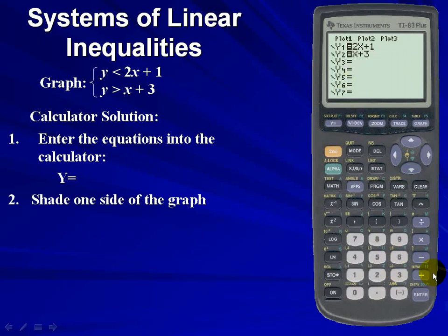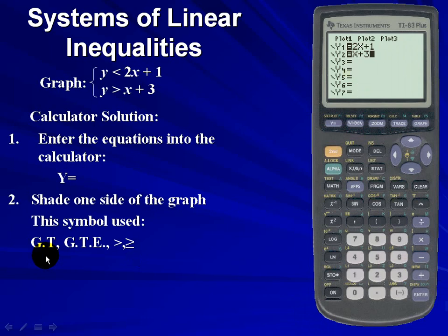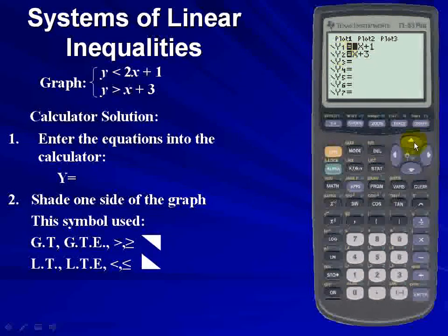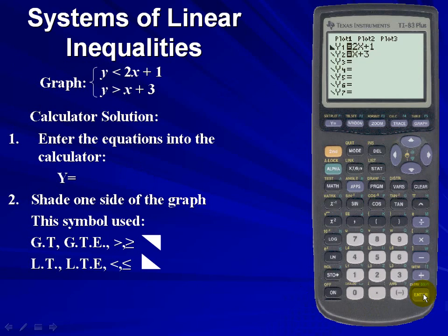Now we have to determine which side of the graph to shade. For greater than and greater than or equal to, we should use the figure where the top half of the square is shaded. For less than and less than or equal to, we should use the figure where the bottom portion of the square is shaded. Our first equation has a less than inequality, so I'll scroll to the far left of y sub 1 and hit enter three times to select the less than symbol.